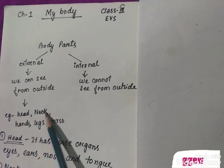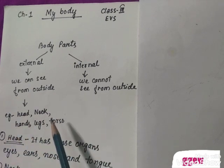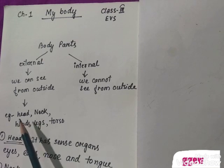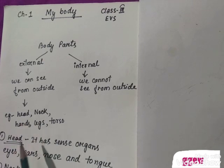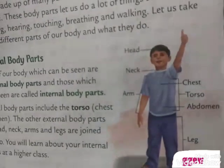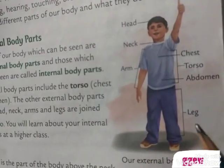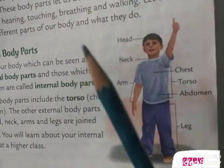I have given some examples here: head, neck, hands, legs, and torso. These are the examples of external body parts, as we can see them from outside. Torso is the part which includes chest and abdomen, as you can see in this picture.